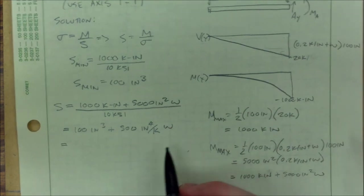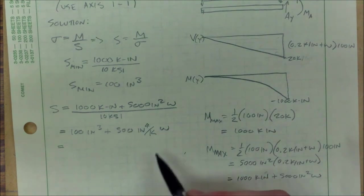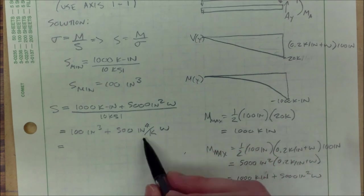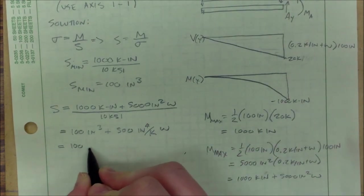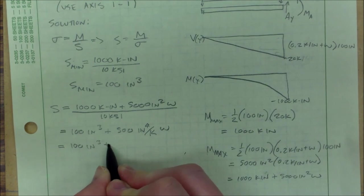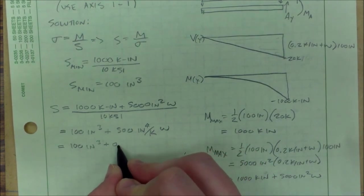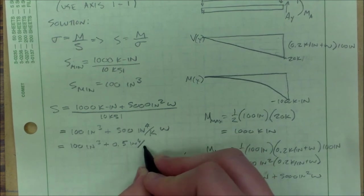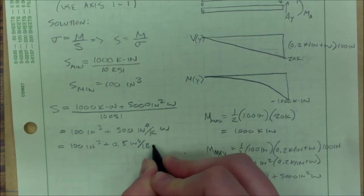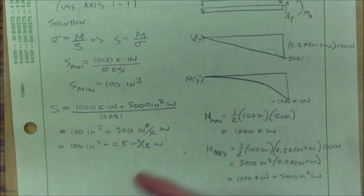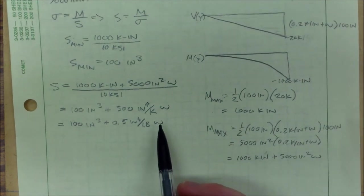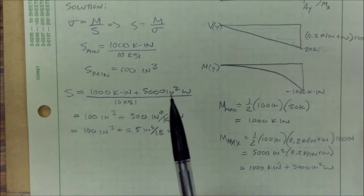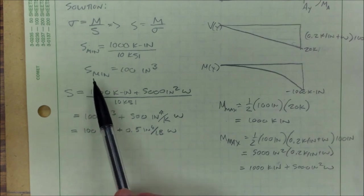And since I look in the table, I see that w is in terms of pounds per foot. I'm going to change this a little bit. I'm going to change my k into pounds. So I'll put 0.5 inches to the fourth divided by pounds.